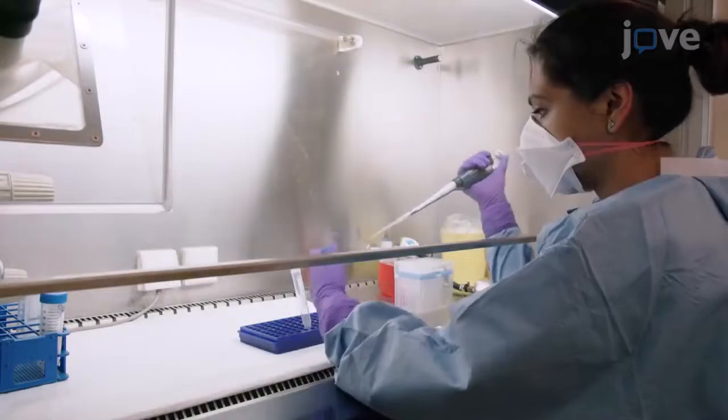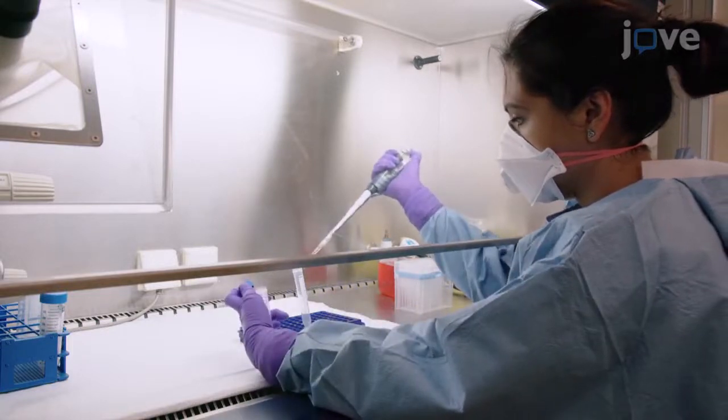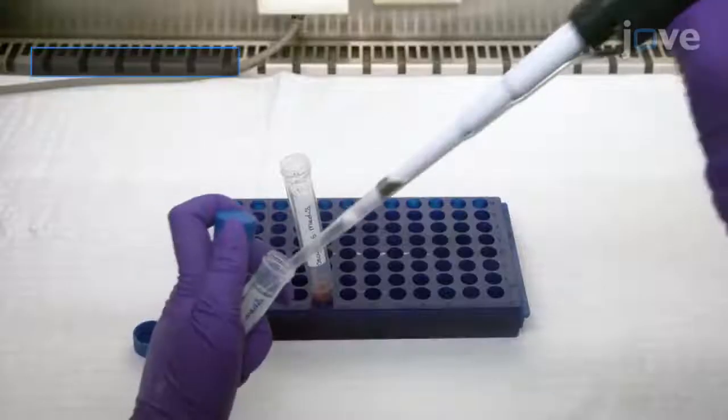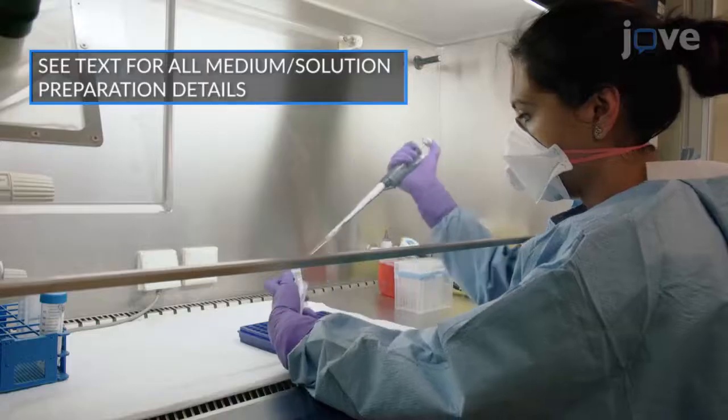To purify C. parvum sporozoites, transfer the oocysts to a 15-milliliter tube and resuspend the cells at a 1 x 10⁷ oocysts per milliliter exocytation medium concentration.